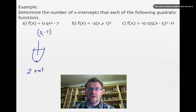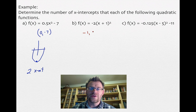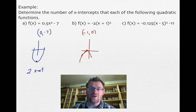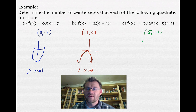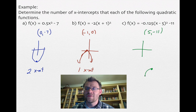The second function is negative 2 times x plus 1 squared with no q value, so the vertex is at (negative 1, 0) — right on the x-axis. Since the vertex sits on the x-axis, there is exactly one x-intercept. The third function is negative 0.125 times x minus 5 squared minus 11, giving a vertex at (5, negative 11). The negative a value means it opens downward, and with the vertex already below the x-axis, there are zero x-intercepts.